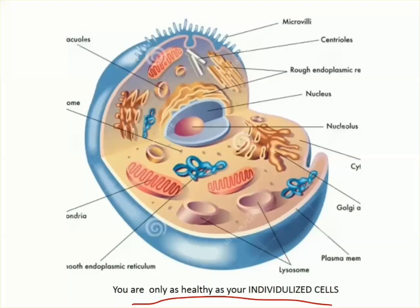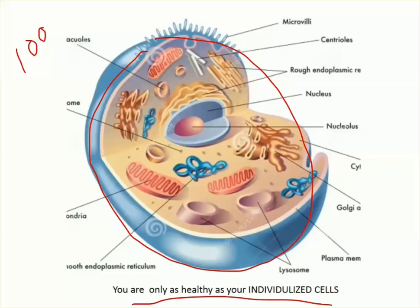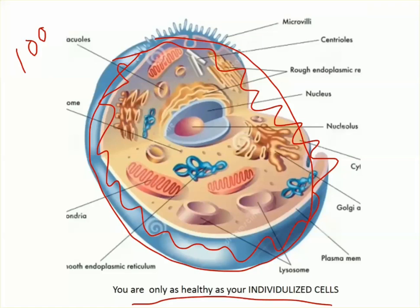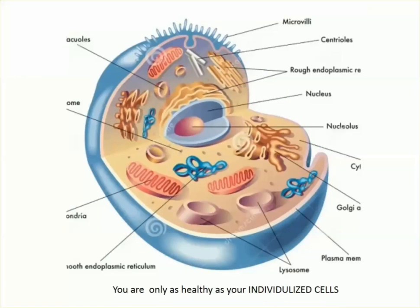I like this quote: you're only as healthy as your individual cells. You're made up of 100 trillion cells, so if your cells are not healthy, you're not going to be healthy and you're going to have an autoimmune condition. What current research shows is that when your cell wall becomes what I would say 'crusty' or inflamed, your body sees your cells as foreign — and when your body sees your cells as foreign, that sounds like an autoimmune condition.